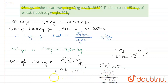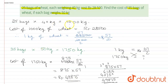So we get rupees 49,875. That is the cost of 35 bags of wheat, each weighing 50 kg, giving a total of 1,750 kg, which costs rupees 49,875.